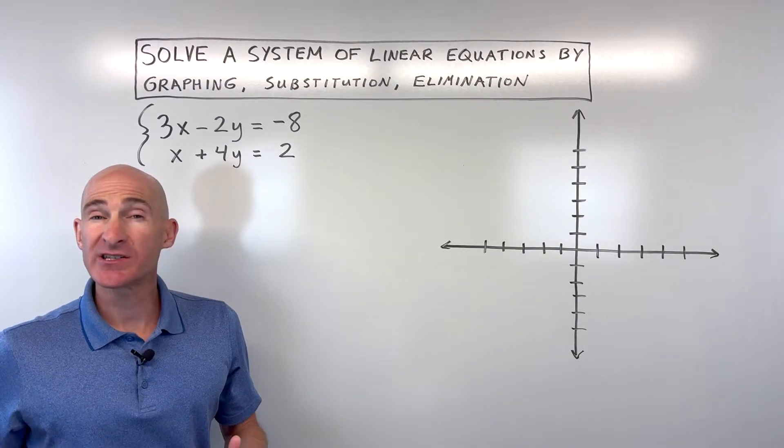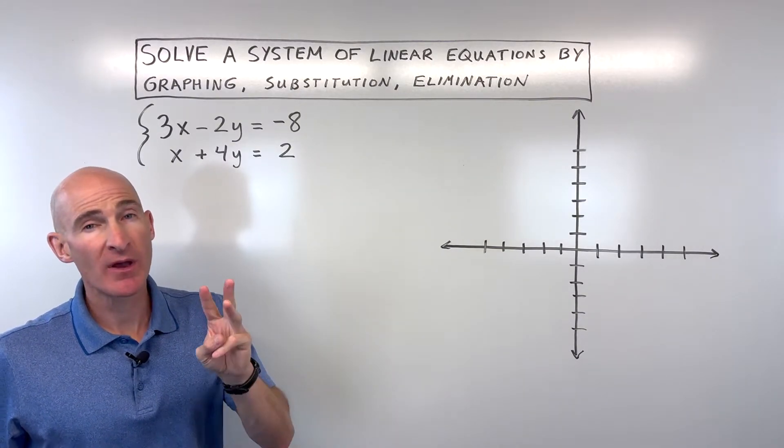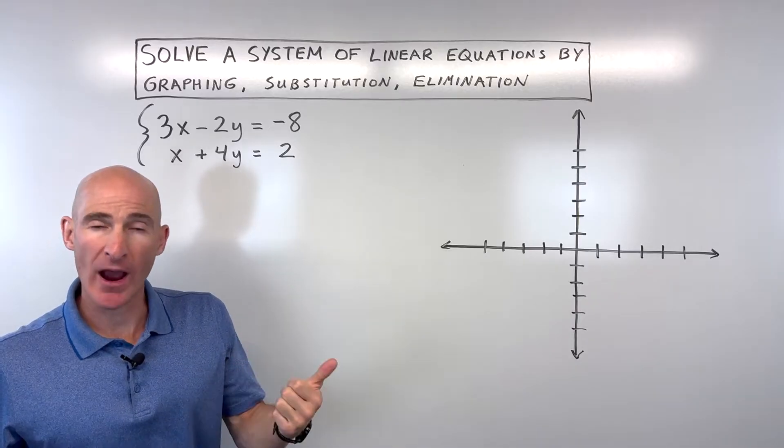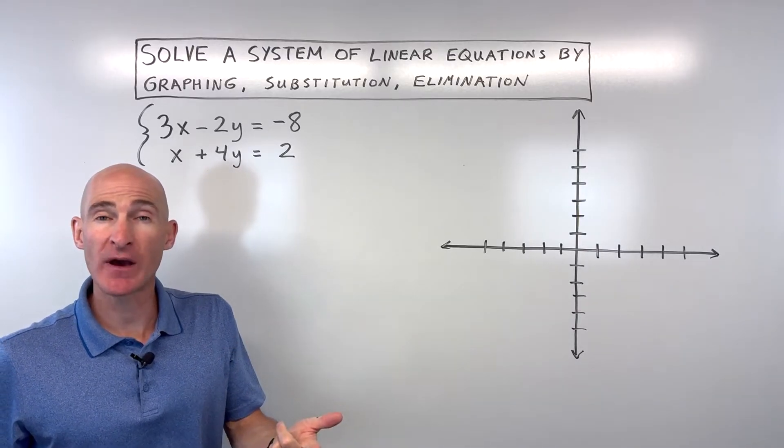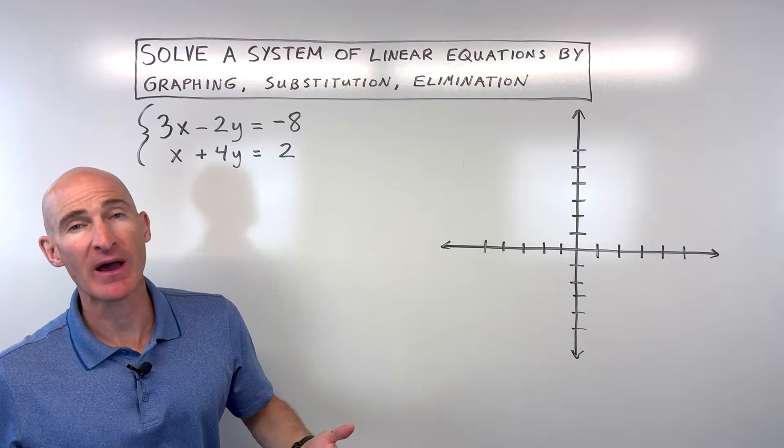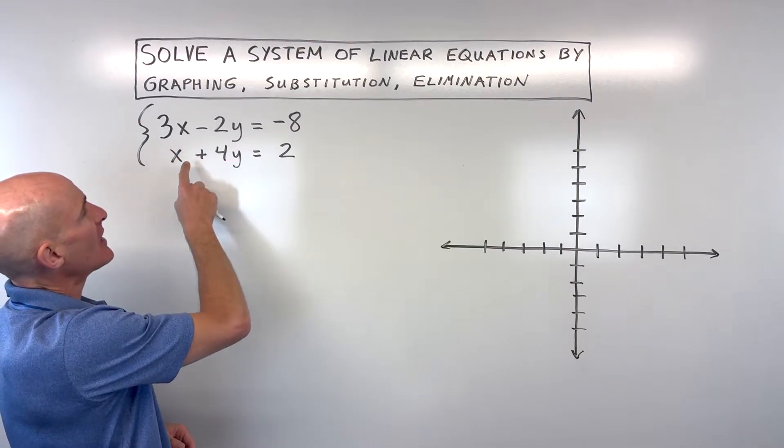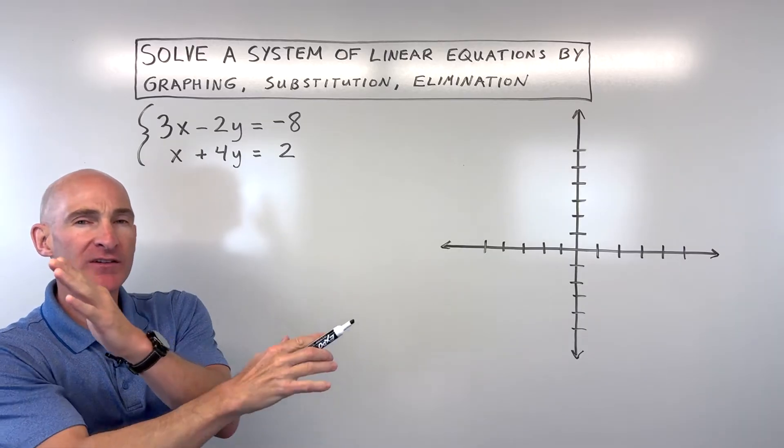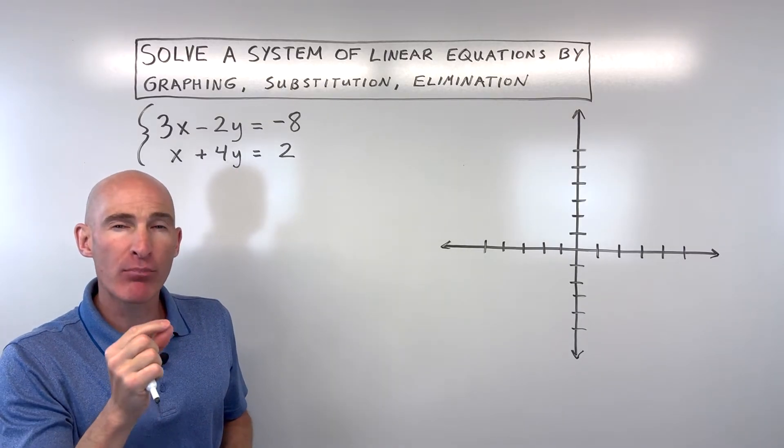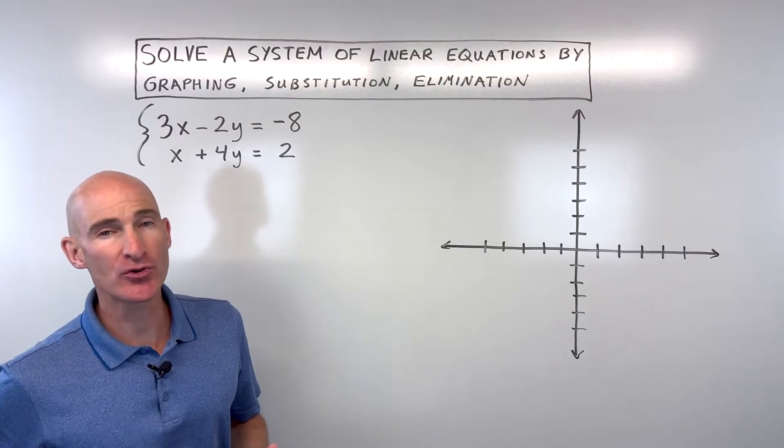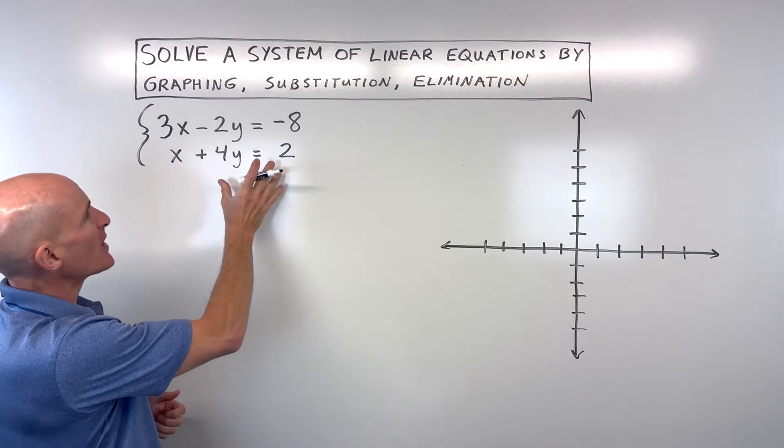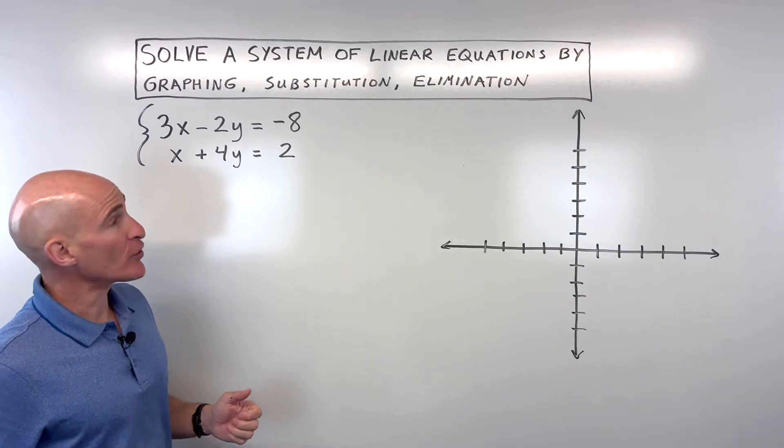In this video, you're going to learn how to solve a system of linear equations three different ways. We're going to do the graphing method, we're going to do the substitution method, and then we're going to talk about the elimination method. So let's dive into this example. We've got these two equations, and we want to find out where exactly do they cross or intersect. What's that point that makes both equations true? Now, there's a couple different ways to do the graphing method, which we're going to do first.